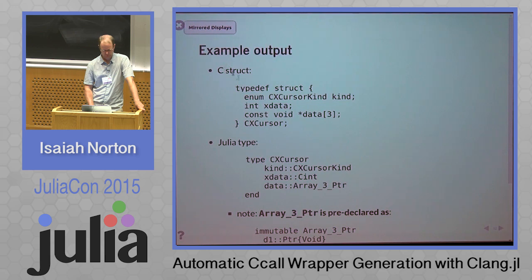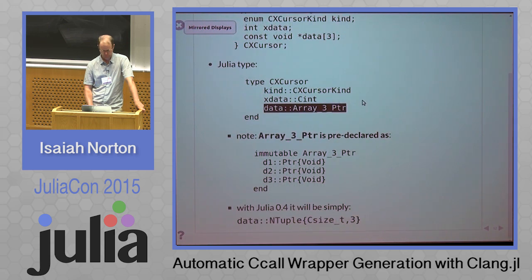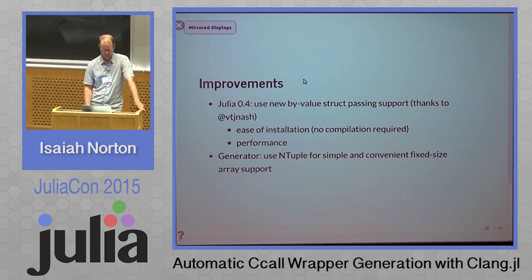Example output for a C function with a return type of CXTranslationUnit and two arguments is translated to a Julia function with a ccall inside it. That's done to allow you to easily customize the output by manually adding setup or teardown before and after the ccall. Another example: a C struct — one of the internal C structs in libclang, the CXCursor — has an enum, an int, and an array of void star, translated to a Julia type with automatic translation of the enum type and other fields. With Julia 0.3, since there's no fixed-size array support, Clang.jl generates gnarly pointer declarations to get structs with the correct size, but with Julia 0.4 that will nicely turn into an NTuple. Pretty soon the by-value struct passing support that Jameson merged will make Clang.jl a bit faster.